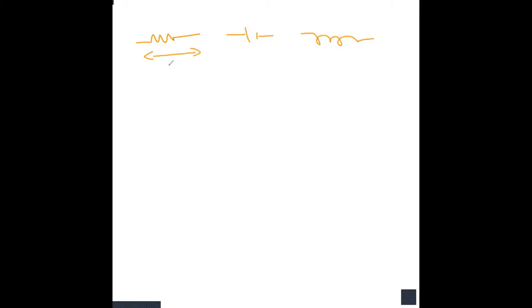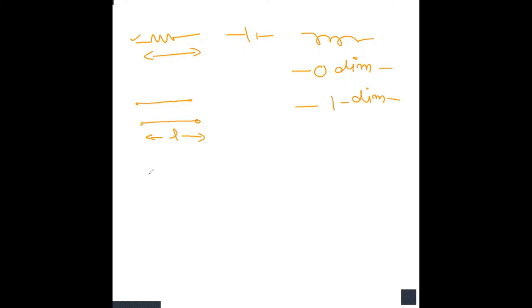For lumped elements like resistors, capacitors, or inductors, the characteristics do not depend on the physical dimensions of the elements — that is why these are called zero-dimensional elements. For transmission lines, the characteristic impedance depends on the length, so they are called one-dimensional circuit elements. In the case of planar structures, the characteristics change in two dimensions — they can be determined in a two-dimensional plane.